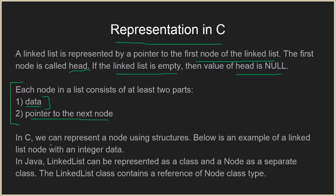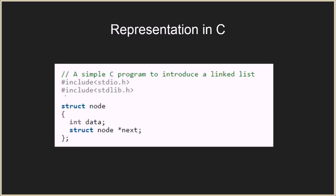In C, we can represent a node using structures. We are going to see an example of a linked list with integer data. In Java, a linked list can be represented as a class, and the node can be a separate class; the linked list class can then hold a reference to the node class. So this is the structure of the node: it has an integer data field and a pointer of type node* which will point to the next node in the linked list.